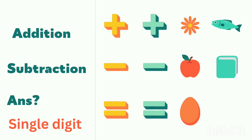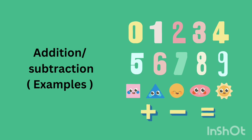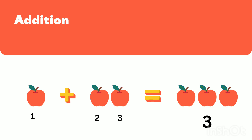Hello everyone, welcome back to our channel Genius Kids. Today let's see examples for addition and subtraction using single digits. We are going to do addition and subtraction. In this picture we have apples. Let's count them: one plus two gives three.